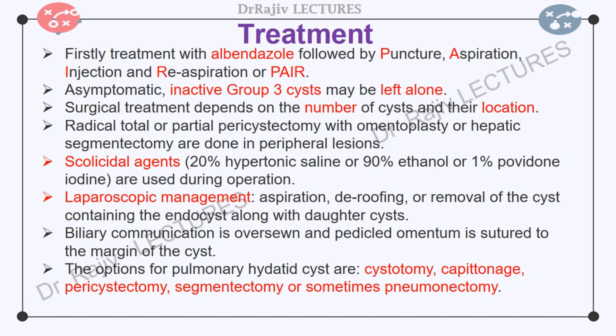The patient should be given adequate drug treatment with albendazole, followed by puncture, aspiration, injection and re-aspiration (PAIR) through minimally invasive surgery. The decision of only drug treatment or combined medical and surgical treatment depends on the number of cysts and their anatomical location. Asymptomatic inactive group 3 cysts may be left alone. Radical total or partial pericystectomy with omentoplasty or hepatic segmentectomy are other options if the lesion is in the peripheral part of the liver. Both radical (resection) and conservative (drainage and evacuation) approaches are equally effective at controlling the disease.